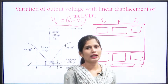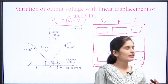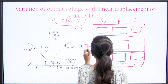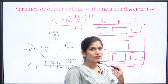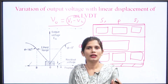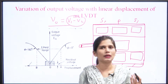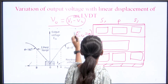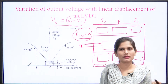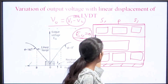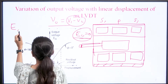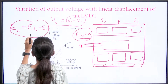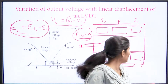Case one is the null position — when the soft iron core has no movement, it is at rest position. When there is no displacement of the core, the output voltage should be zero. This is because the flux induced in the secondary windings cancels out, so the resultant voltage ES1 minus ES2 gives zero. At null position the output voltage is zero volts.